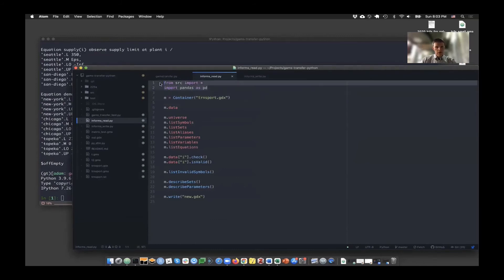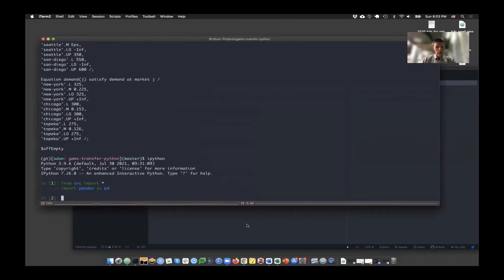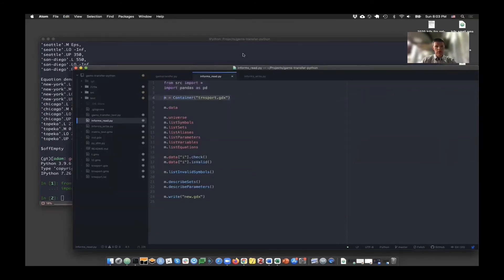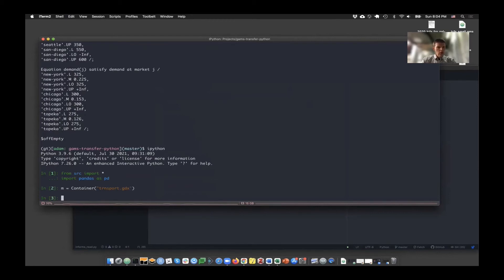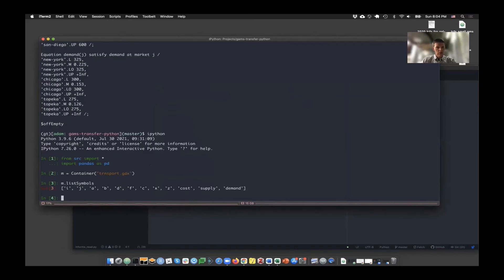So what I'm going to do now is just read in the GDX file that was output from that. I'm going to go ahead and import my GAMS transfer packages here. The syntax will change when we get it into the actual distribution, but it'll be something similar. I want to go ahead and create a container from the transport GDX. And so now I've done that. And I can see that my container has symbols in it. It's aware of all of the different symbols that are in the transport GDX file, but it has none of the records in it.